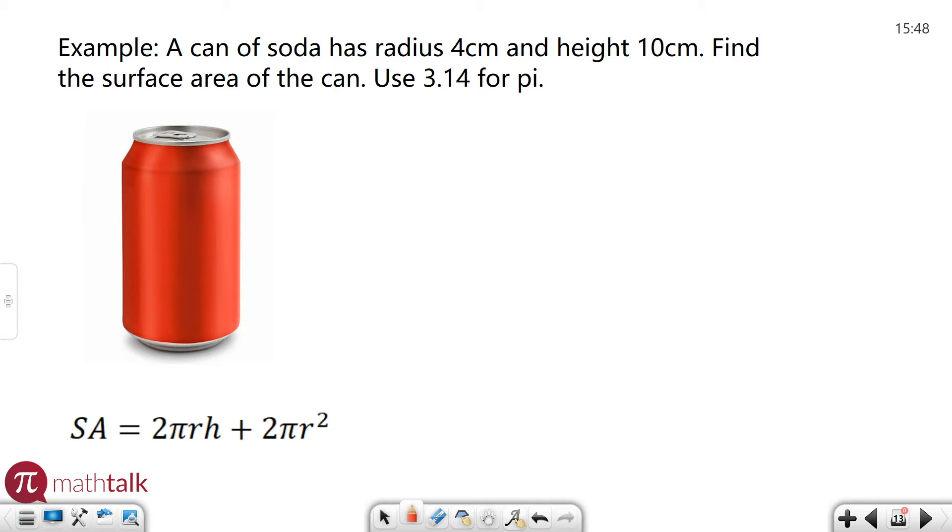The example asks us: a can of soda has a radius of four centimeters and a height of 10 centimeters. Find the surface area of that can, and use 3.14 for pi.